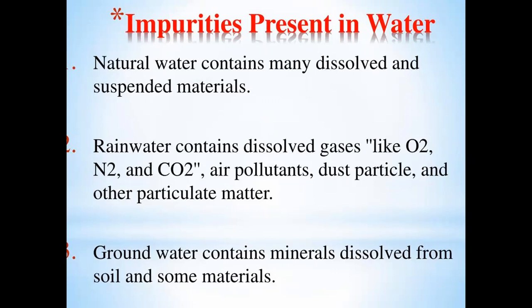Rain water contains dissolved gases like O2 (oxygen), N2 (nitrogen), and CO2. Air polluted dust particles dissolved in water and other particulate matter can also enter and pollute water. Ground water contains minerals dissolved from soil and some other materials.